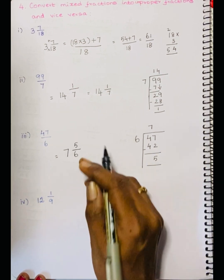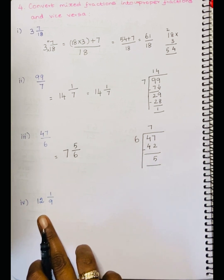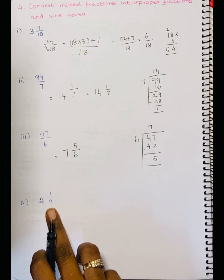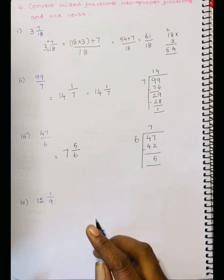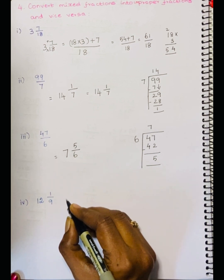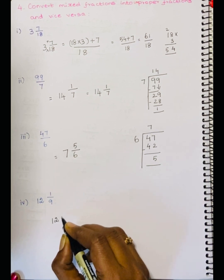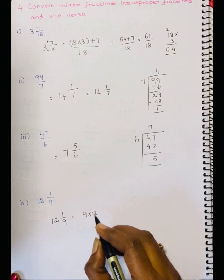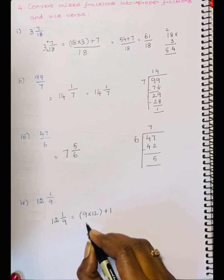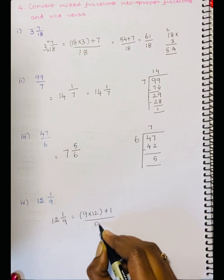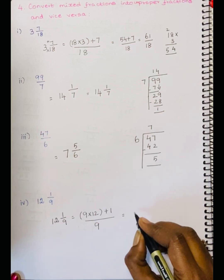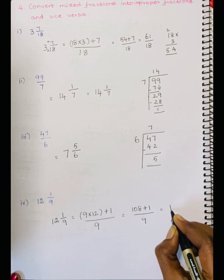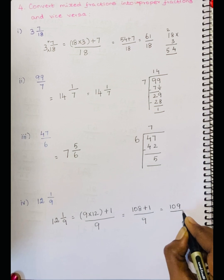How to write: is equal to first answer 7, then remainder 5 by 6. So 47 divided by 6 is equal to 7 and 5 by 6. Fourth sum: 12 and 1 by 9. This is a Mixed Fraction. We have to convert to an Improper Fraction. Is equal to 9 into 12 plus 1 divided by 9. 12 nines are 108, 108 plus 1 divided by 9 is equal to 109 divided by 9.